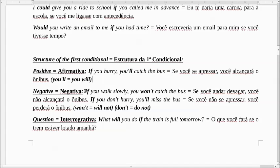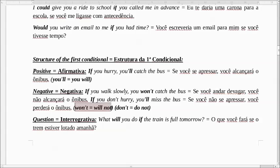A negativa: If you walk slowly, you won't catch the bus. Se você andar devagar, você não alcançará o ônibus. Esse won't é a negativa do will — significa will not. Another example: If you don't hurry, you will miss the bus. Se você não se apressar, você perderá o ônibus.